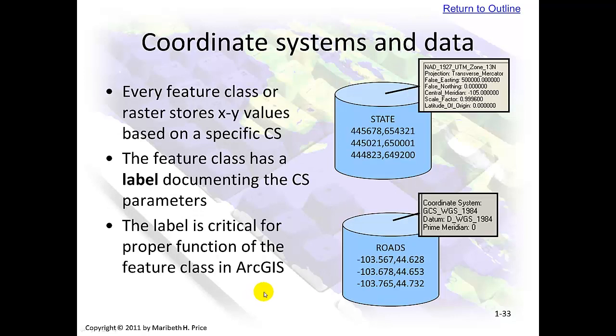Coordinate systems and data. Every feature class or raster stores X and Y values based on a specific coordinate system. The feature class has a label documenting the coordinate system parameters, and that label is critical for proper function of the feature class in ArcGIS.